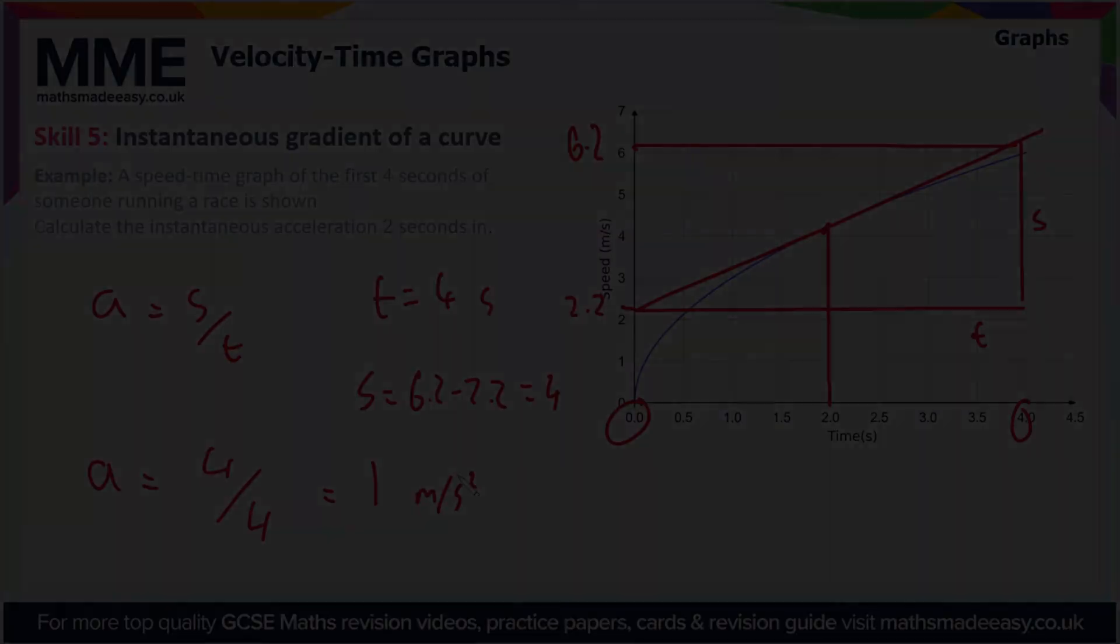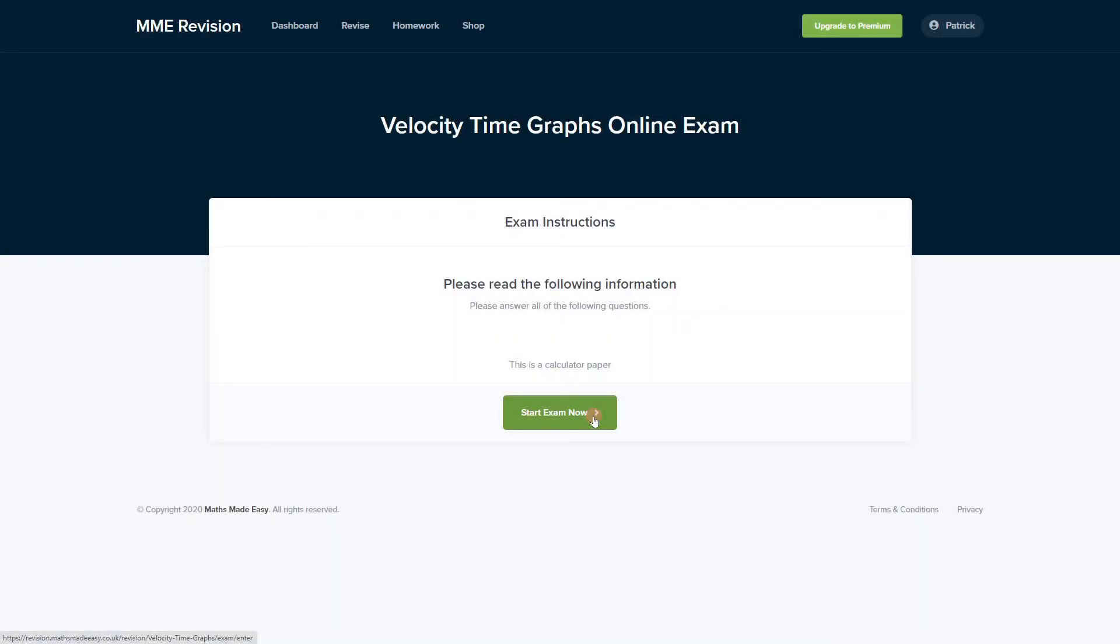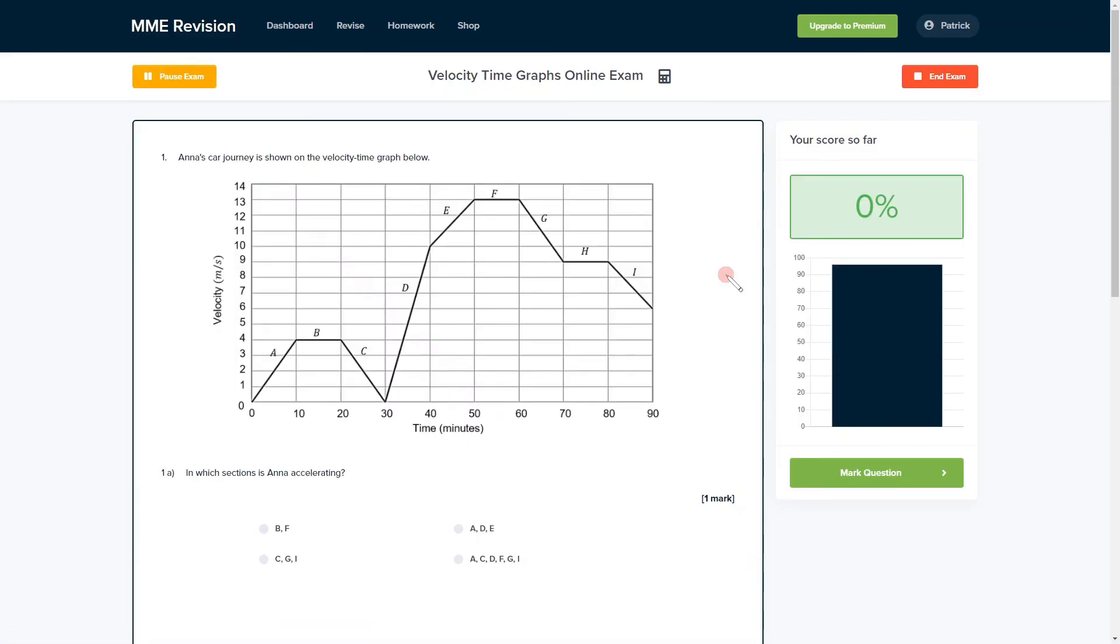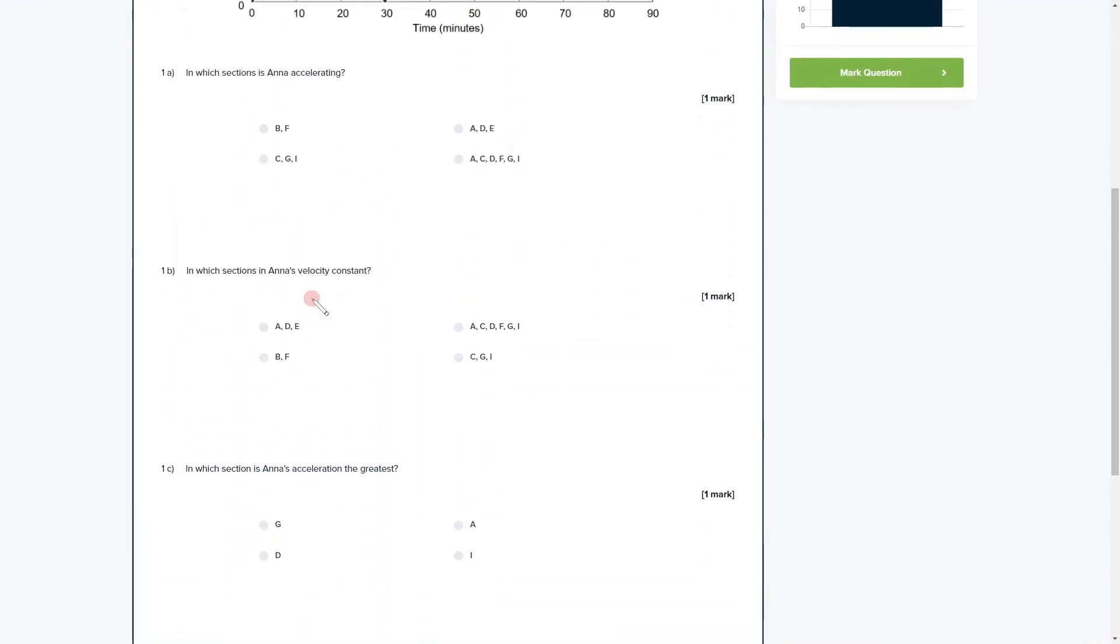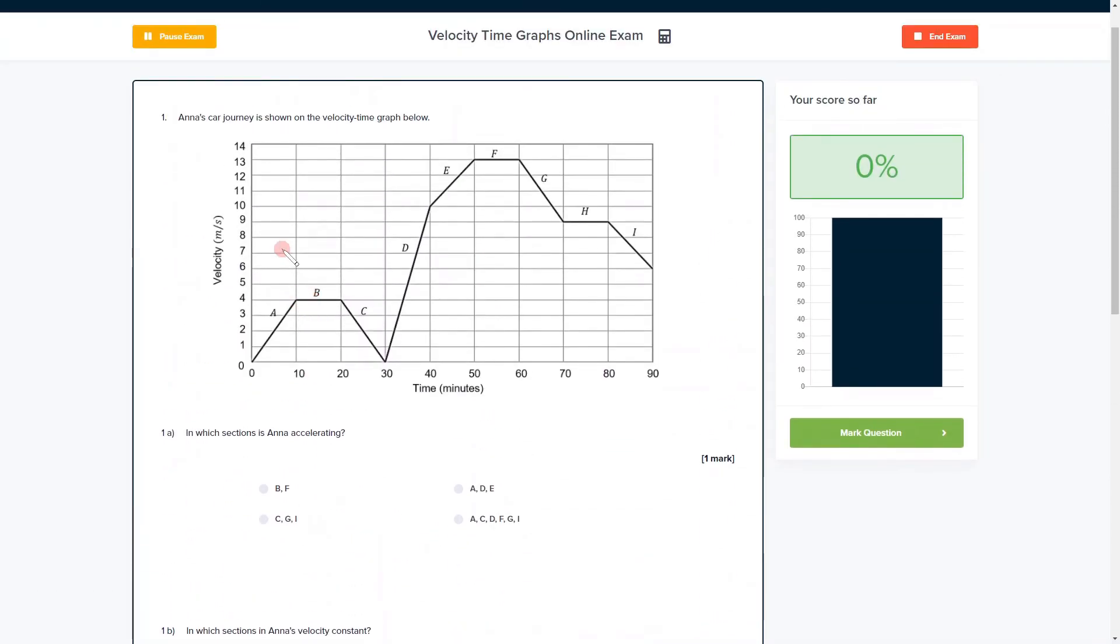If you want to get some practice with velocity-time graph questions, why not try our online exam? You can get there through our revision platform. There are loads of different questions to have a go at, and you get instant feedback on each one, which will allow you to keep track of the areas you're weakest at and need to improve on. If you're interested, click the link below.